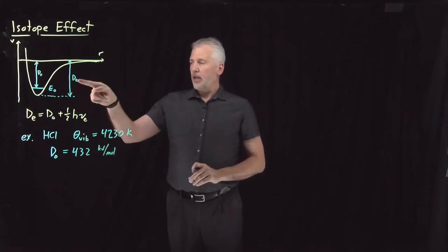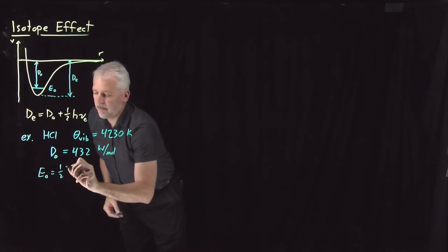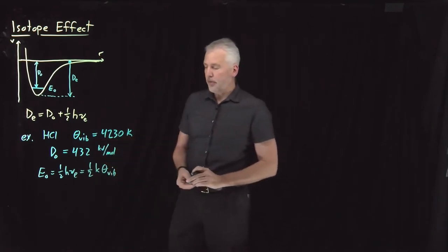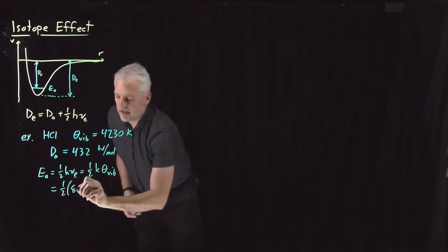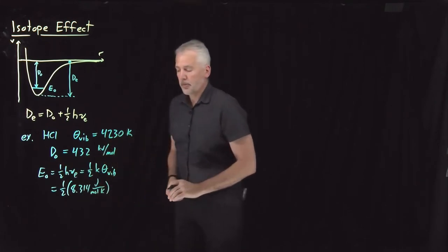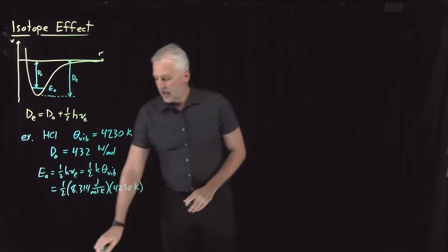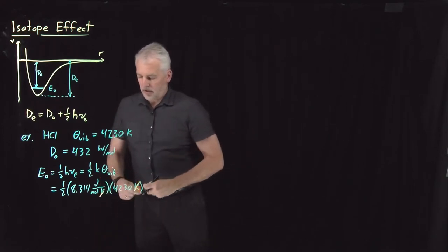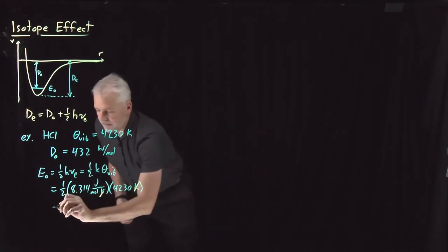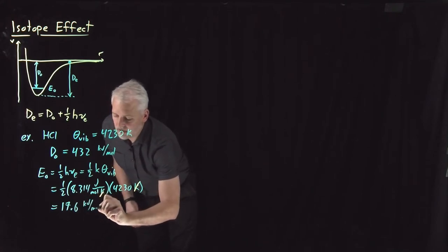Those two pieces of information are enough to tell us what D sub e is. The zero point energy — the energy of the ground state — is one half H nu, or equivalently, one half Boltzmann's constant times the vibrational temperature. Using the gas constant for convenient units of joules per mole, multiplying by the vibrational temperature — units of Kelvin cancel — and cutting that in half, it works out to be 17,600 joules per mole, or 17.6 kilojoules per mole.